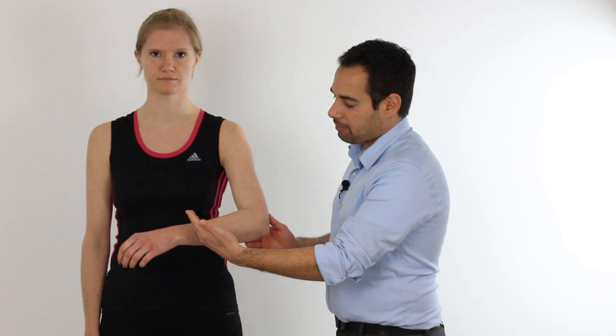also known as tennis elbow. This condition is whereby we have a tendinopathy of the common extensor tendon of the muscles of the posterior forearm which are the wrist and finger extensors.